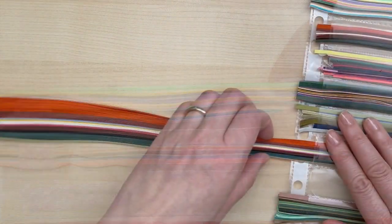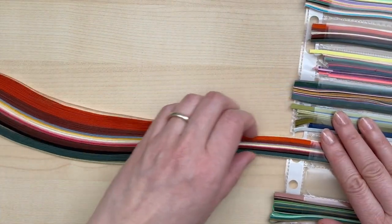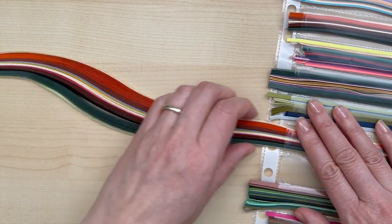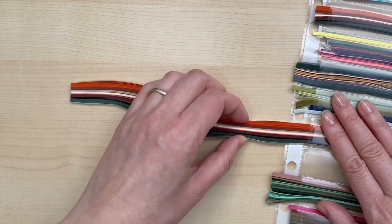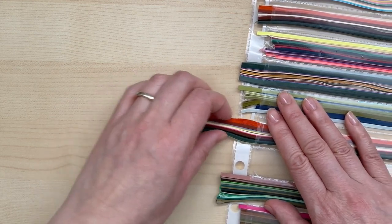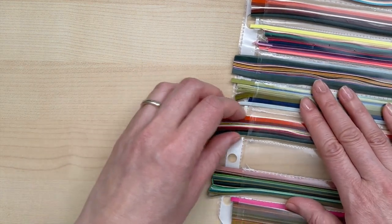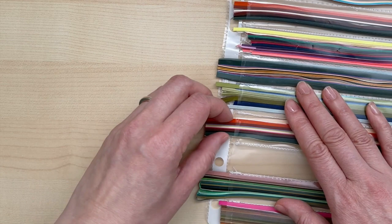If you do choose to use this method to store your quilling strips, another tip is to feed the paper in the channel by gripping close to the plastic, not way out here where the paper can escape. Since the pros greatly outweigh the cons, so far I'm pretty happy with this method compared to my previous organizers.